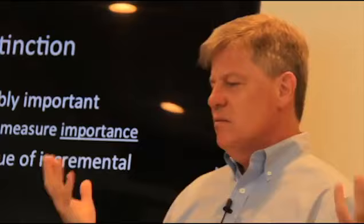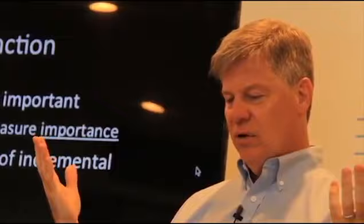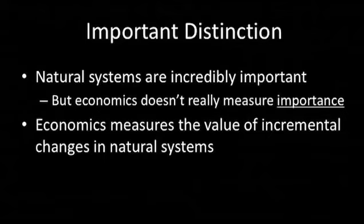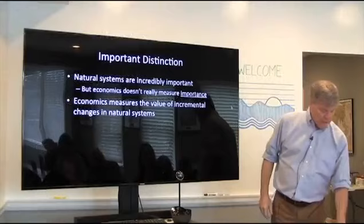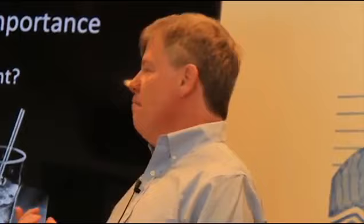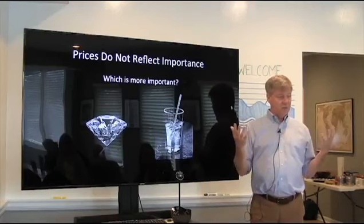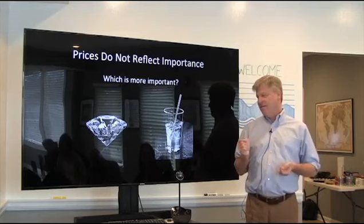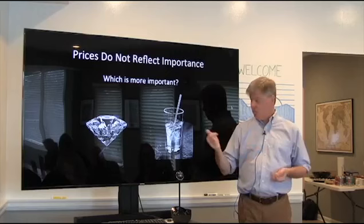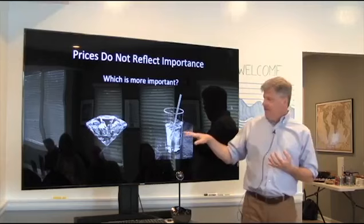Ecosystems are incredibly important — incredibly valuable in one sense of the word. But something really important to understand is that economics doesn't measure importance. All it really does is measure the benefit of incremental changes. One way to convey this is the diamonds and water paradox: which is more important, water or diamonds? Water, of course. But if you look at prices, diamonds are incredibly expensive and water is not — because what the price of something measures is that next incremental unit. Diamonds are scarce, whereas water usually isn't. So all the value is capturing is the importance of things under a specific supply and demand condition.